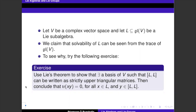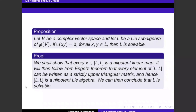From this we get motivation for why traces relate to solvability. Let's now prove a first concrete result. Proposition: let V be a complex vector space and L a Lie subalgebra of gl(V). Then if the trace of xy equals zero for any two elements x and y in L, L is solvable. This is going in the other direction — vanishing of traces implies solvability — which is not obvious.